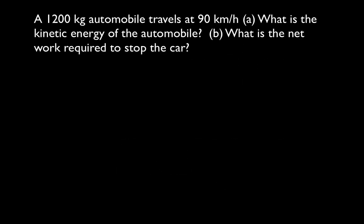So this is the problem we're going to do. It's relatively straightforward. We have an automobile with a mass of 1,200 kilograms, and the automobile is traveling at 90 kilometers per hour. We want to know what is the kinetic energy of the automobile, and if we wanted to—excuse me—if we wanted to stop the car, how much work would be required? And this goes to the work energy theorem.